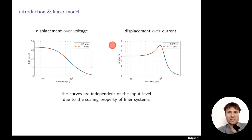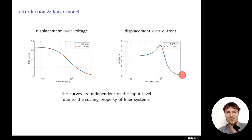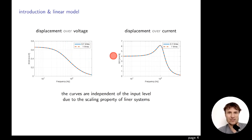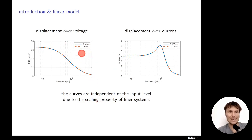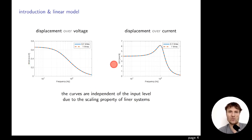The second linear loudspeaker equation is that the force due to the applied current equals the force on the mechanical part: mass times acceleration, plus mechanical losses times velocity, plus stiffness times displacement. When we use this linear model and plot displacement over voltage and displacement over current as functions of frequency, we see the same curves for different driving voltages — normal for a linear system obeying the scaling property, so the curves are completely independent of driving input level.